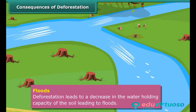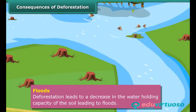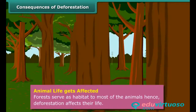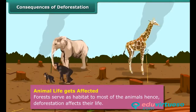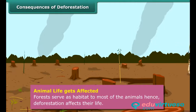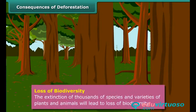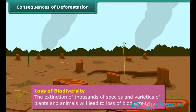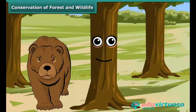Floods: Deforestation also leads to a decrease in the water holding capacity of the soil. The movement of water from the soil surface into the ground is reduced, resulting in floods. Deforestation also affects animal life since forests serve as habitat to most of them. Loss of Biodiversity: Cutting of forests means the extinction of thousands of species and varieties of plants and animals, many of which have never been catalogued scientifically.